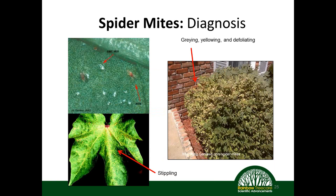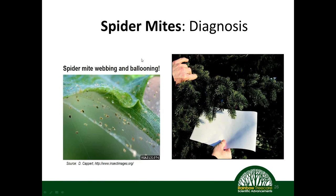Spider mites are a very damaging and common landscape pest. Diagnosis includes stippling of the leaf; warm season mites are often found against the foundation of a house, showing yellowing, graying, and general decline. In high populations and certain species, you'll see actual webbing on the plant. To confirm active spider mites, do the white paper test: take a piece of suspect plant material, slap it on white paper, use a hand lens to look for movement or wipe your hand across it to look for little red smudges.